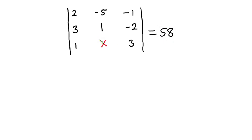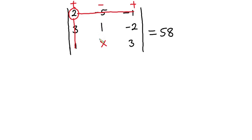Now in finding the determinant of a 3x3 matrix, if we take an element — let's say 2 over here — the elements on this column and on this row are not considered. So you can see that we are left with a 2x2 matrix: 2, then 1, x, negative 2, and 3.